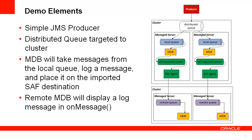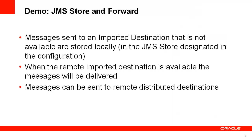On the remote domain, there is a message-driven bean which takes messages off of the remote queue and displays the message on the screen. In the demo, I'll show how messages sent to a destination that's not available are stored locally, and then when that remote destination becomes available, the messages will be delivered. We'll also be sending messages to a remote destination that is a distributed destination.